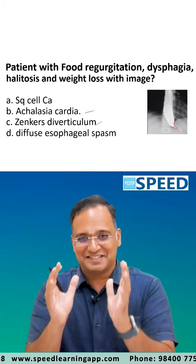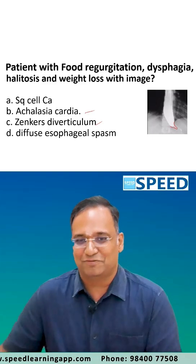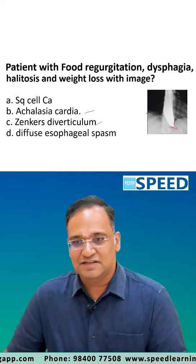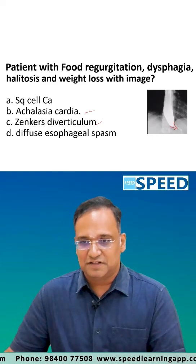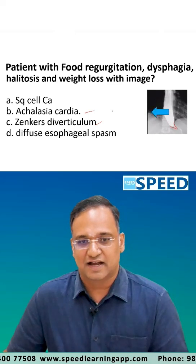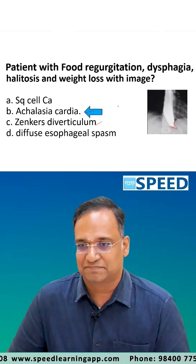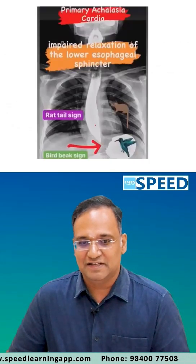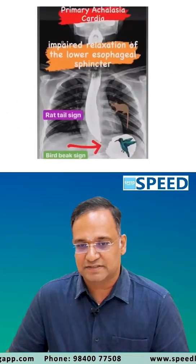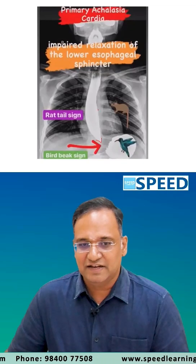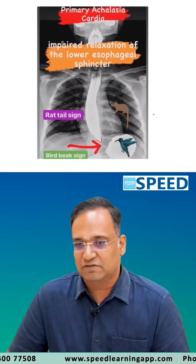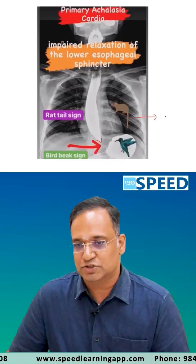Both conditions share the same three kinds of presentation. If the image is provided showing a bird's beak sign, the answer is Achalasia cardia. In case they give a rat tail appearance, it will mostly go for carcinoma of the esophagus.